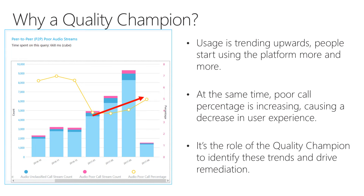Let's now talk about the quality champion. So why do we recommend a quality champion? This is what we've seen with many customers. They start using Teams and everything is fine — someone checks the quality and sees users are having a good experience. But then over time, more and more users start using Teams because they see the value and get motivated by their peers. People also do much more on Teams — more meetings, more calls — and so slowly there's more load on the network. More poor calls occur and the percentage increases, meaning the user experience decreases. The role of the quality champion is to look on a regular basis, identify these trends and drive remediation.